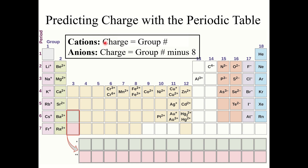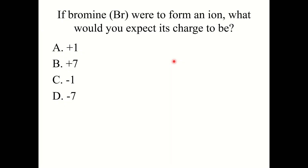To recap: for cations in groups 1, 2, and 3, their charge equals their group number. For anions in groups 5A, 6A, and 7A, their charge equals their group number minus eight. For example, if bromine were to form an ion — bromine is in group 7A, so it forms a minus-one anion by gaining one electron.